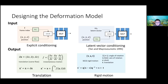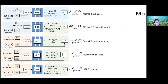With these design choices, you can do a mix-and-match — combining whether you use latent vector or explicit conditioning, and whether you use dense motion fields or scene flow — to synthesize all the methods we see today. This puts different papers in a clear perspective and helps understand what core differences exist between approaches.